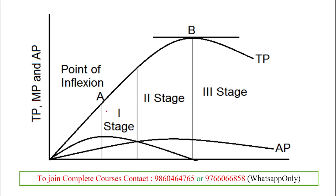Looking at the graphical representation, first the total product increases at a rapid pace. Then after point A, the total product continues increasing but at a diminishing rate. It then attains a peak at point B, after which total product decreases. These are the three stages: increasing at an increasing rate, increasing at a diminishing rate, then decreasing. The point of inflection occurs at the first stage.